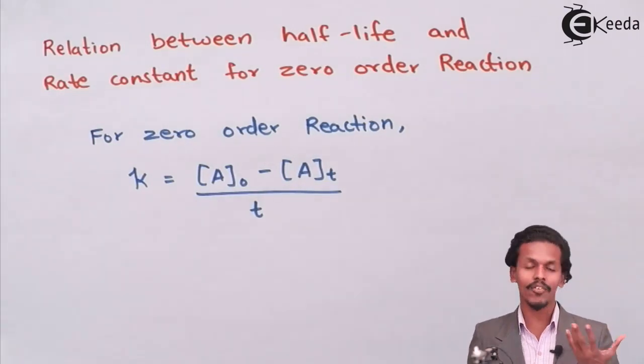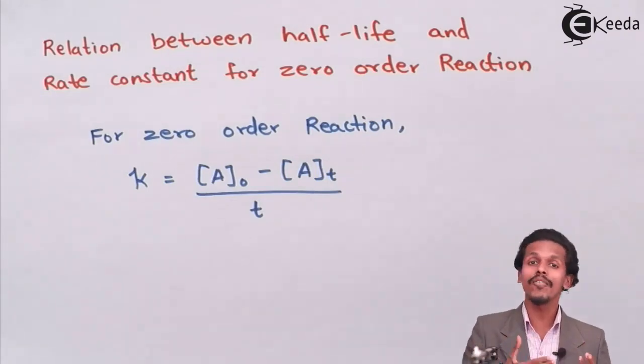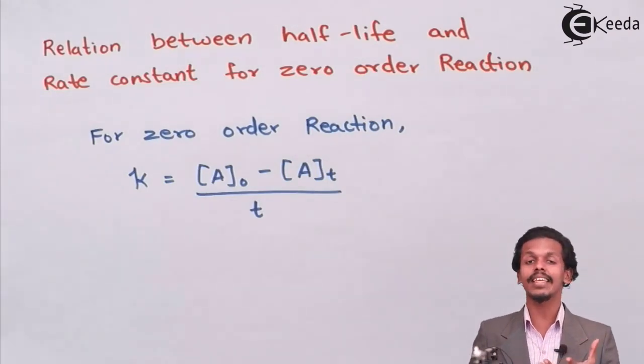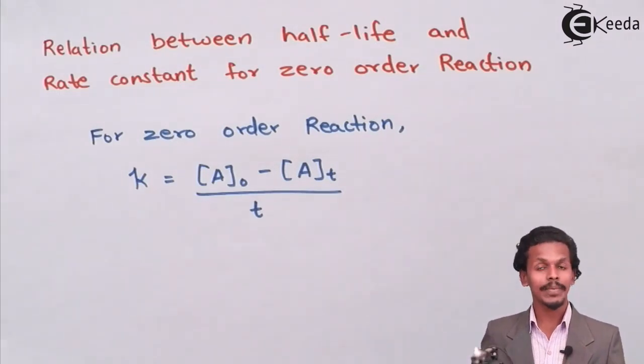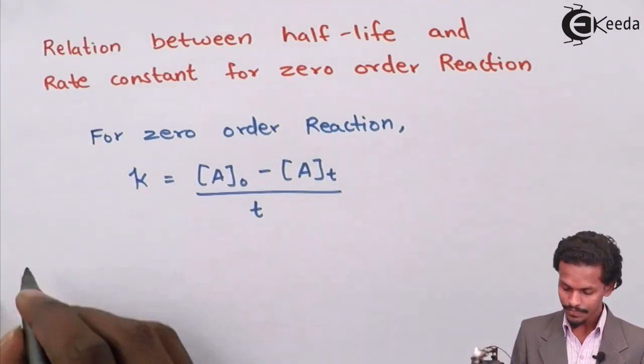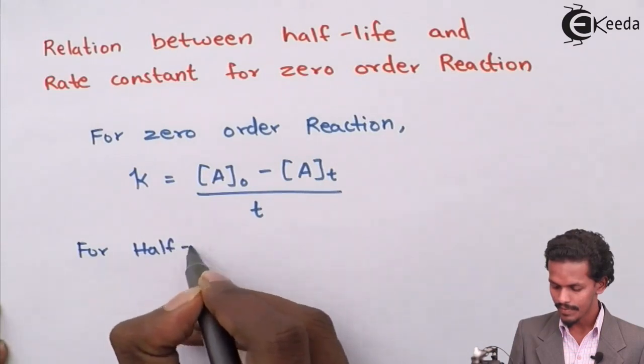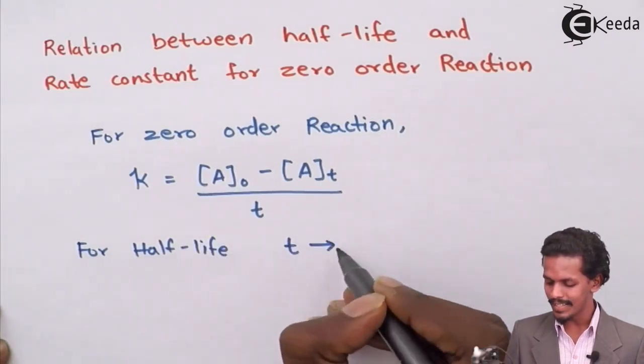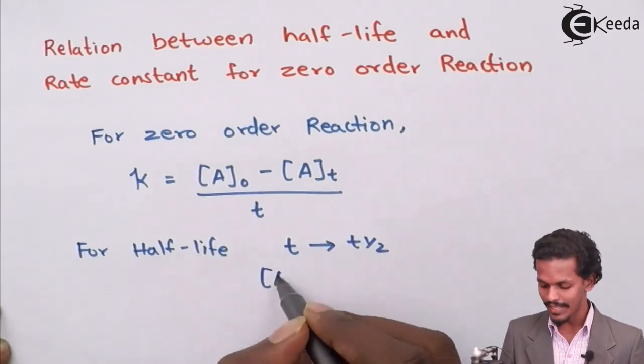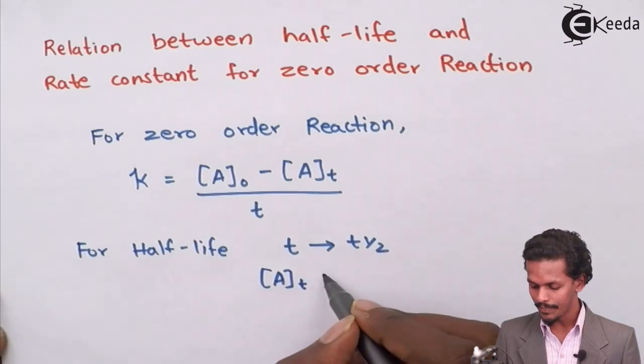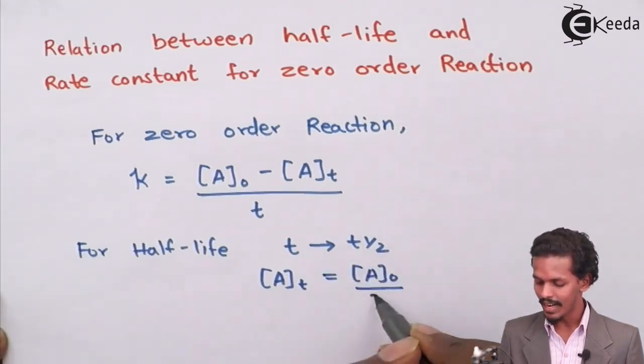And this AT will be half of the initial concentration, that is AT will be A0 divided by 2, and the time can be represented as T half. So therefore for half-life, time can be represented as T half, while the final concentration that is left after time T will be the initial concentration's half.